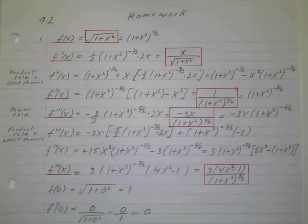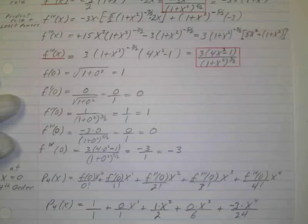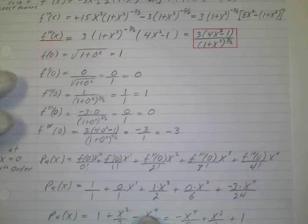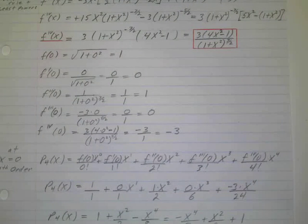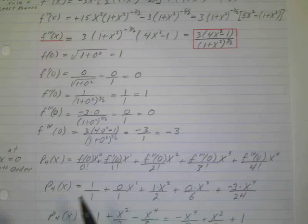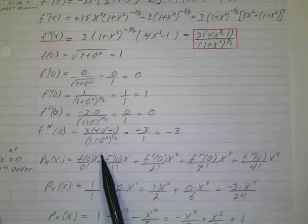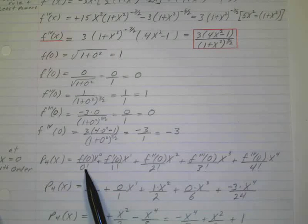Let's look ahead at what the fourth-order Taylor polynomial is. It's just given — you can look at Taylor's formula for the general form, and that's over on page 487. It's basically f of zero times x to the zero over zero factorial, which is just one, so it's just f of zero.